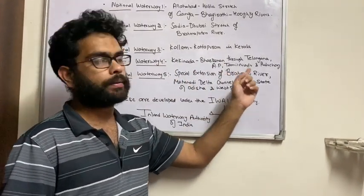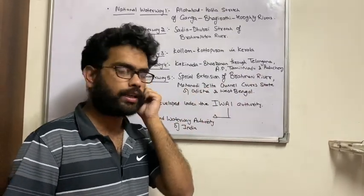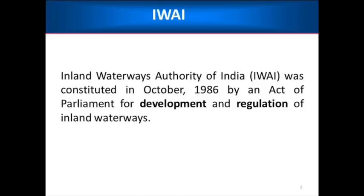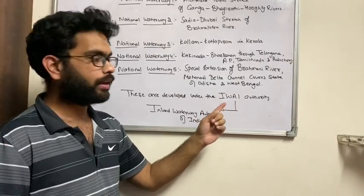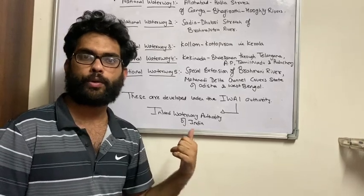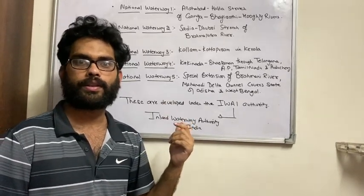National Waterway 5 is a special extension of the Brahmani River and Mahanadi delta channel, and it covers the states of Odisha and West Bengal. All five of these waterways are developed under the authority of IWAI — the Inland Waterway Authority of India. I hope you are clear with these waterways. Thank you.